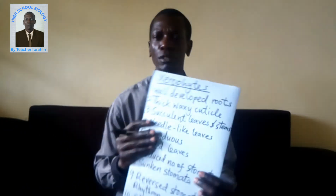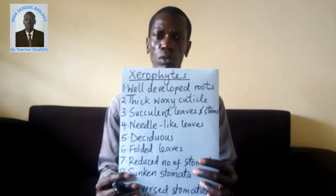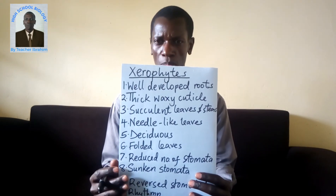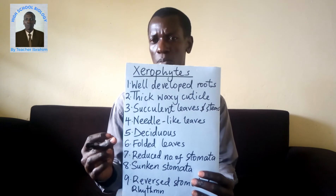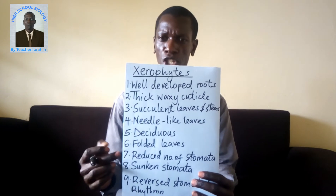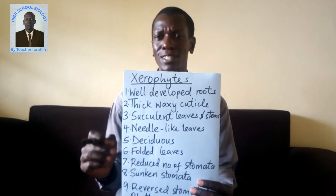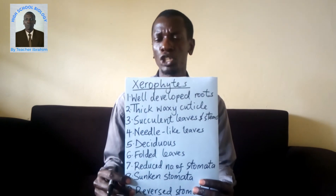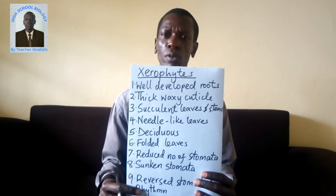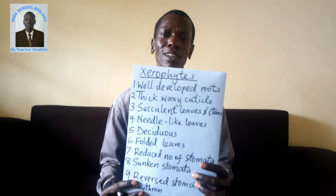Adaptation number three: they have succulent leaves and stems. The succulent leaves and stems enable them to store water in their tissues, specifically in tissues known as parenchyma tissues. Adaptation number four: they have needle-like leaves. The needle-like leaves enable them to reduce the rate of transpiration.